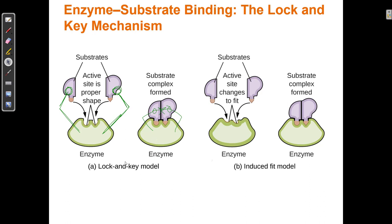The first model is the lock and key model, where the shape of the active site is already the right shape. In this cartoon, one particle has a round shape that fits in one part of the active site, and another has a pointy shape that fits in another part. So in the lock and key model, the enzyme already has an active site the right shape to fit the two particles. In the induced fit model, when one of the substrate particles bonds to the enzyme, it changes the shape of the active site, causing it to match the second substrate. So if the active site has to change shape to fit one or both substrates, we call that the induced fit model.